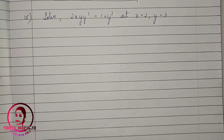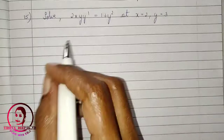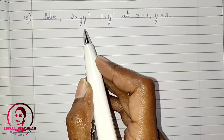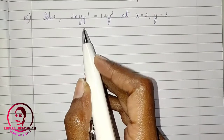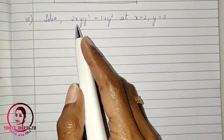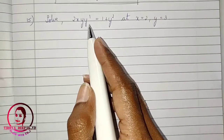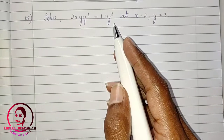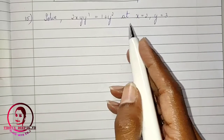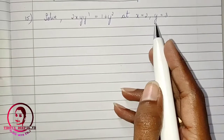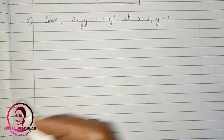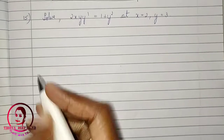Good morning everyone. Today we will start with our next problem on variable separable form: 2xy·y' = 1 + y², at x = 2, y = 3.